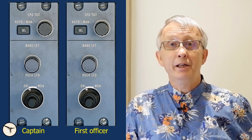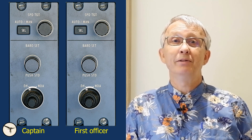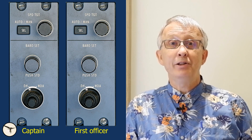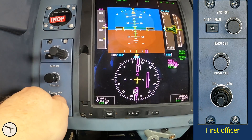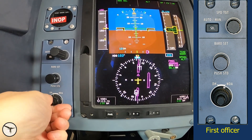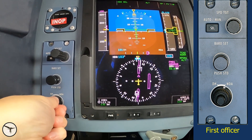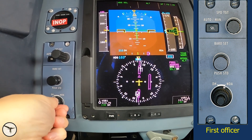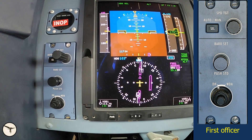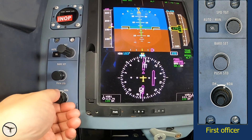When you set DH or MDA, you must remember that both pilots must have set the DH-MDA selector to the same position. Otherwise, the DH and MDA labels will start to flash on the PFD. In this video, only the captain has selected DH and it doesn't take long before the labels start to flash. When the first officer also selects DH, the flashing stops. The same procedure applies when setting MDA.